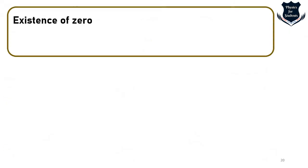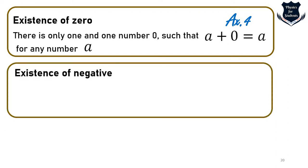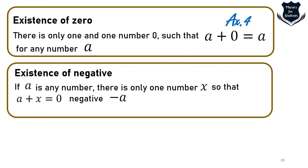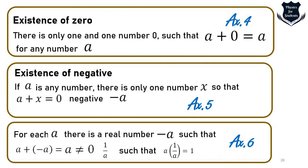Now we come to the existence of zero — Axiom 4. There is one and only one number 0 such that a plus 0 equals a for any number a. Next is the existence of negatives — Axiom 5. If a is any number, there is one and only one number x such that a plus x equals 0, and this number is called the negative of a and is denoted by minus a. And then Axiom 6: for each a there is a real number as stated. So we take these six axioms.